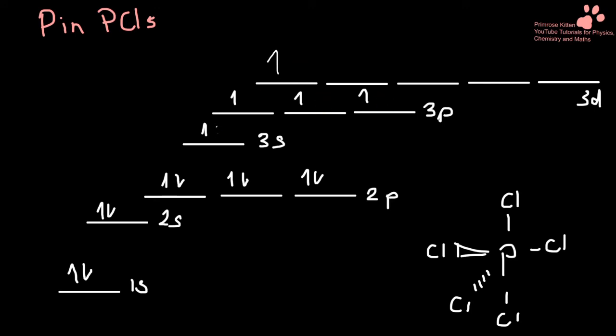We now have five identical spaces down, down, down, down, down, for our electrons from the chlorine to come in and bond. One, two, three, four, five.